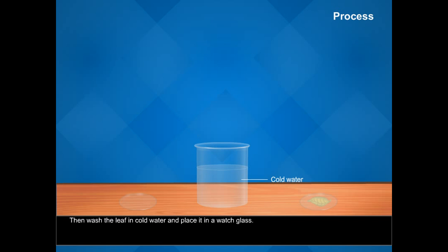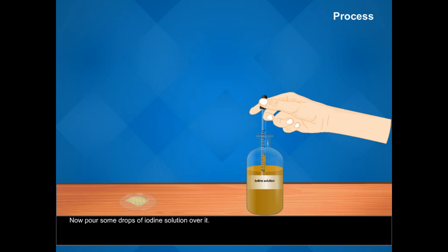Then wash the leaf in cold water and place it in a watch glass. Now pour some drops of iodine solution over it.